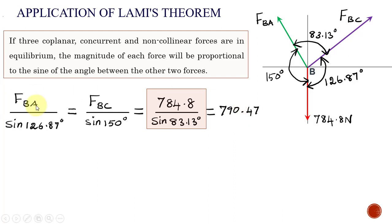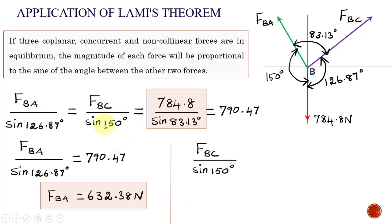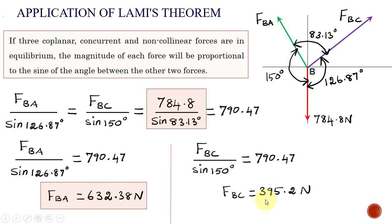Now we calculate FBA: FBA divided by sine(126.87°) equals 790.47. The only unknown is FBA, so FBA equals 790.47 multiplied by sine(126.87°), which gives 632.38 Newton. Next, we calculate FBC: FBC divided by sine(150°) equals 790.47. Therefore FBC equals 790.47 multiplied by sine(150°), which equals 395.2 Newton.